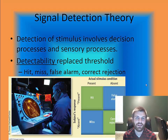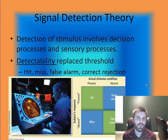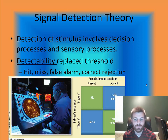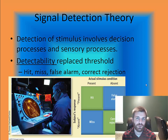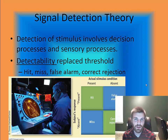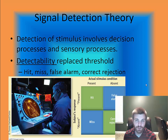In the context of detecting underwater missiles on radar: a hit is when something is identified as a missile and it actually is one; a false alarm is when something is thought to be a missile but turns out to be nothing — perhaps a whale; a miss is when a missile is present but goes undetected; and a correct rejection is when something appears similar to a missile but is correctly identified as a whale. Those are your four possible outcomes in signal detection theory.